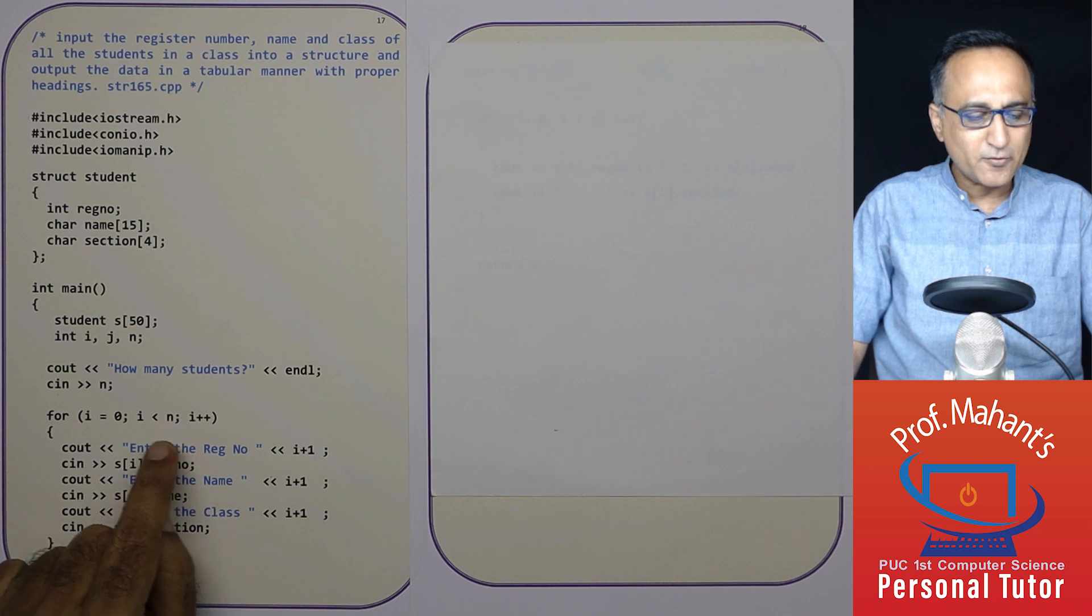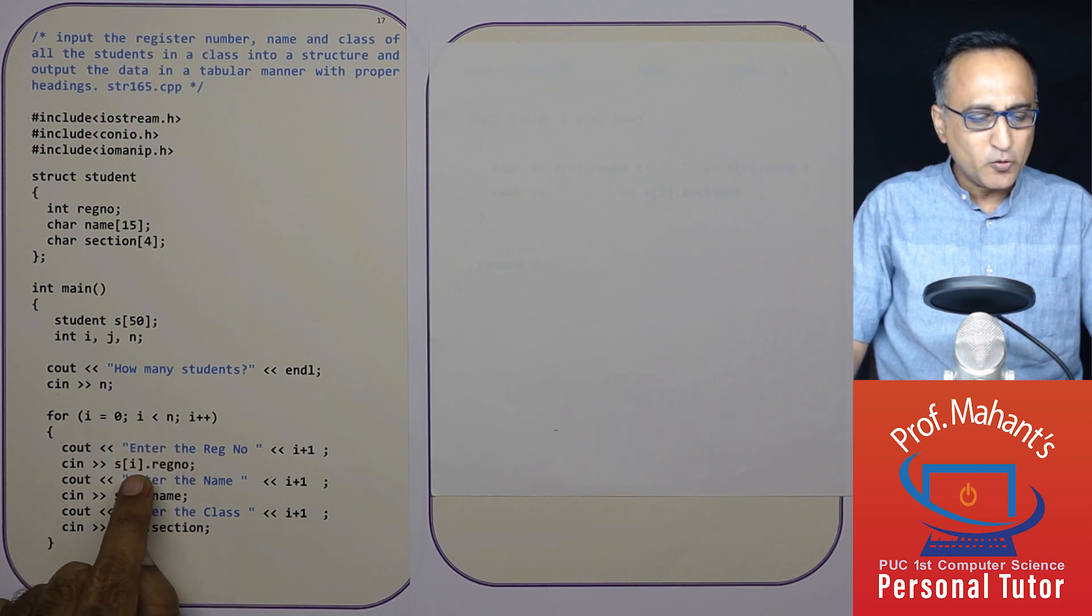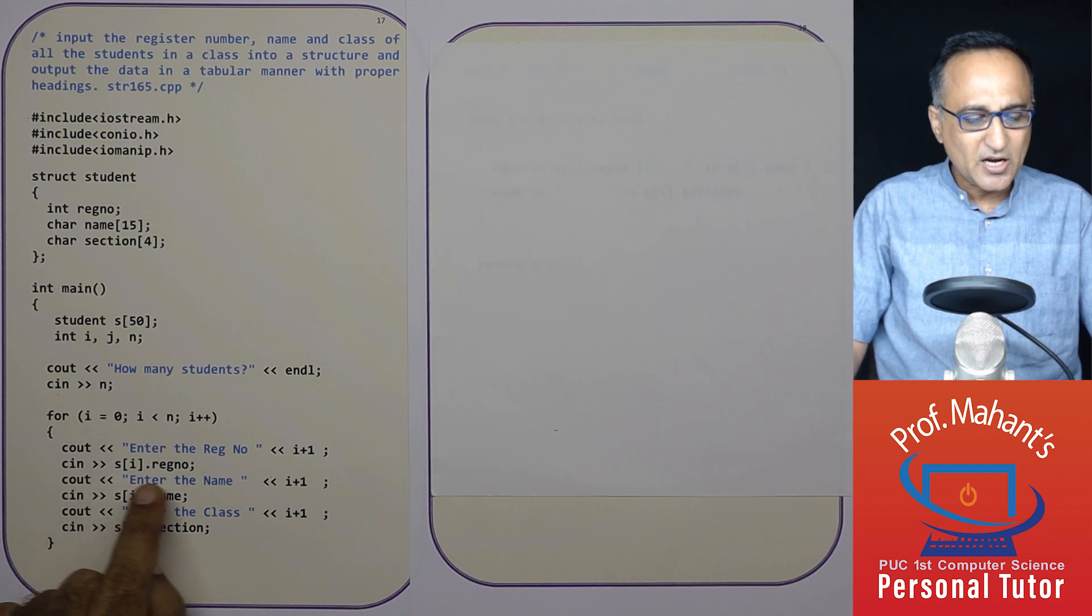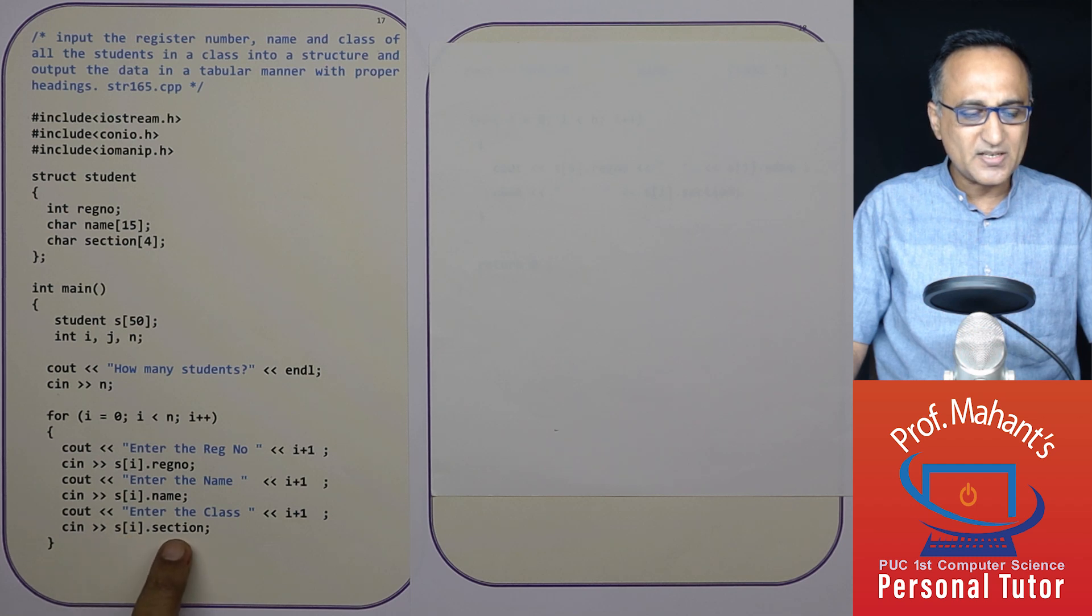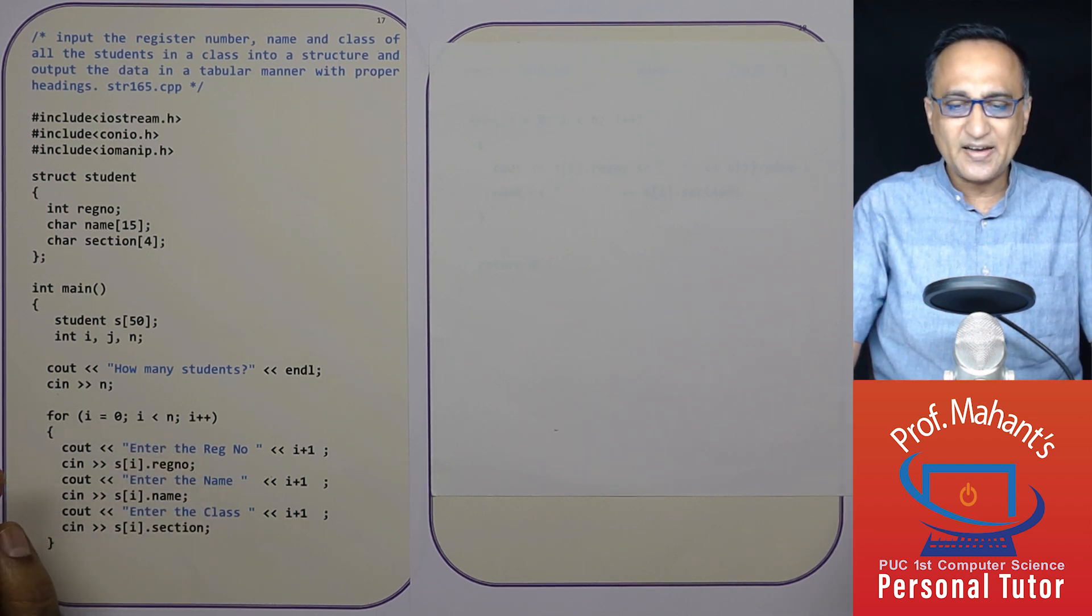Suppose n is five, for five students, I am going to read the register number, name and section. See how I am referring to using the array convention I am saying s square bracket i dot registration number. So when i is zero, the zero student registration number is entered into the structure. Zero student name, zero student section. This way for all the 10 or 20 students the data is entered.